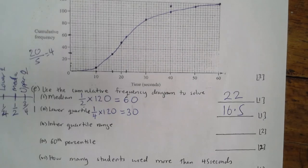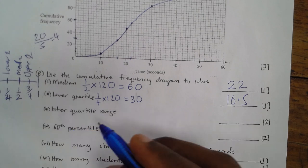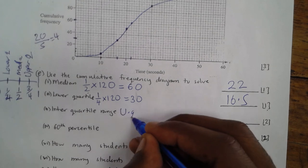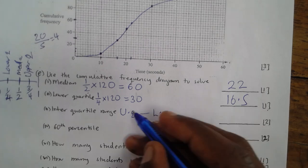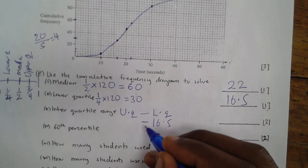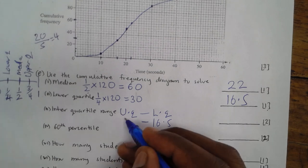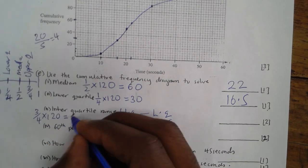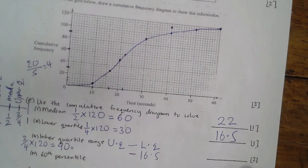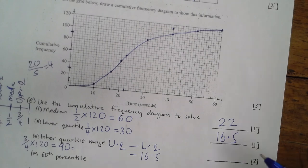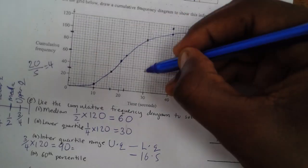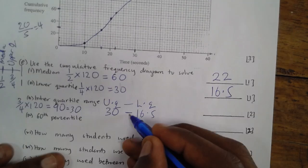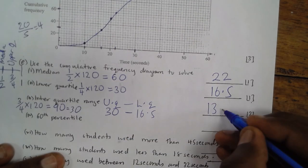Next, I need to find the interquartile range, which is upper quartile minus lower quartile. My lower quartile is 16.5. For the upper quartile, I go to 90 on the y-axis, move horizontally to the curve, and drop down — the upper quartile is 30. So the interquartile range is 30 minus 16.5, which gives 13.5.